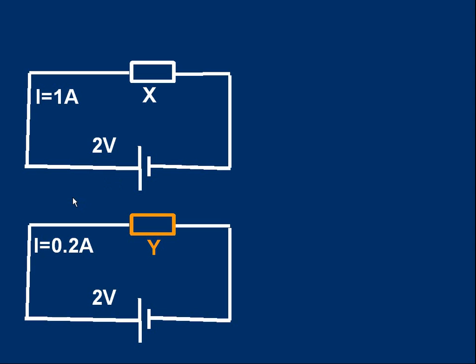Take a look at the top circuit. We've got a single cell with an emf of two volts. What that means is if we were to connect a voltmeter across this object X, it would read two volts. There's a voltage, a potential difference of two volts, trying to push a current through the object X, and the current which passes through X is one amp.